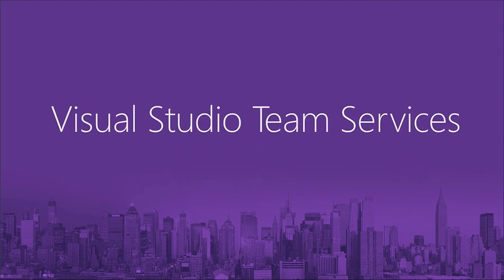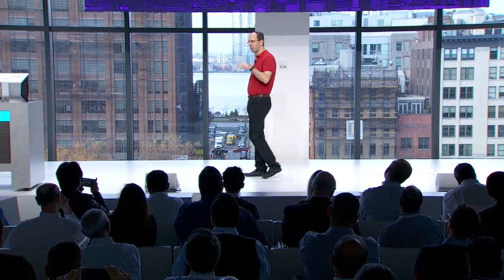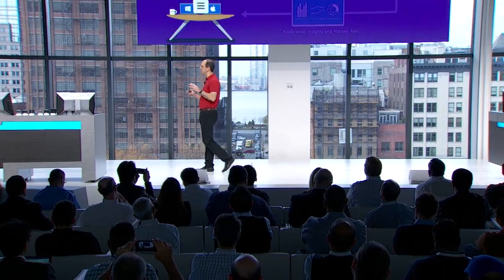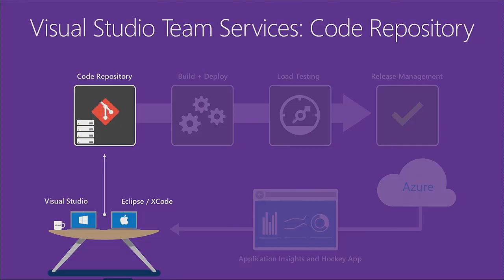We're also releasing a whole bunch of great new enhancements to it this week that make the core services even better. The great thing about Visual Studio Team Services is it enables you to host an unlimited number of private code repositories for free using either Git or TFS. You can easily check in code from any tool or language, full version history is part of that, and you get integrated code diffing tools support and overall agile project management.